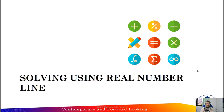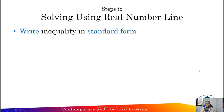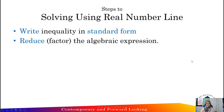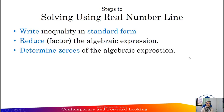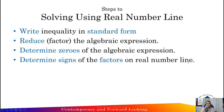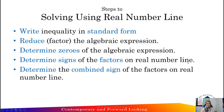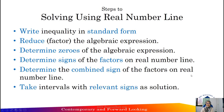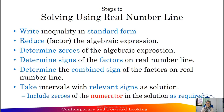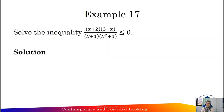Solving using the real number line. Steps to solving: First, write the inequality in standard form. Second, reduce and factor the algebraic expression. Third, determine the zeros of the algebraic expression. Fourth, determine the signs of the factors on the real number line. Fifth, determine the combined sign of the factors on the real number line, and take intervals with relevant signs. Include zeros of the numerator in the solution as required.